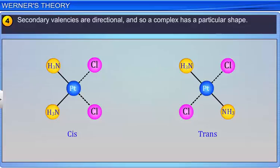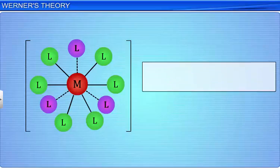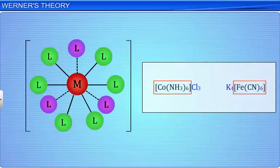To distinguish between the two types of valencies, Werner introduced the concept of using square brackets to enclose the atoms that make up a coordination complex and which are therefore not ionized.